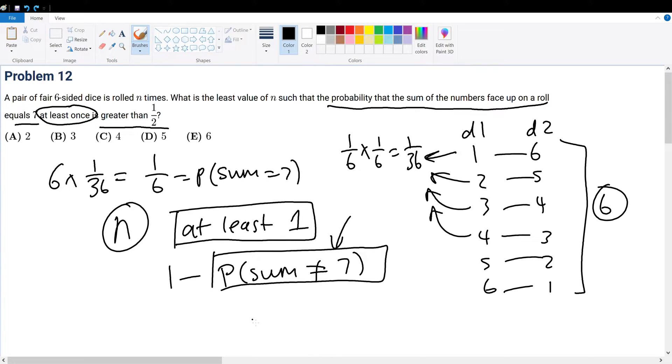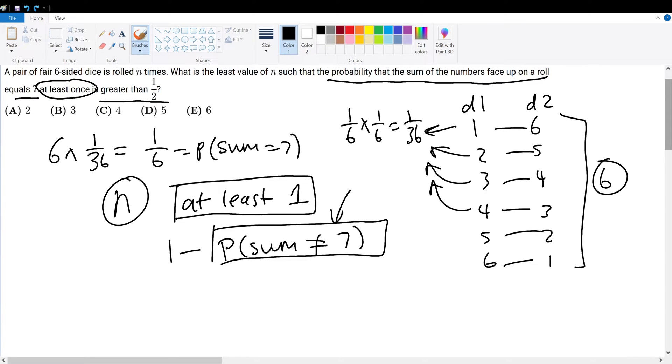Think about it: if I subtract out the probability that everything fails, what I'm left with is the probability that at least something works. That's complementary counting, one of the fundamental counting principles. At least 1 equals 1 minus the probability that everything else fails. In this case, where the sum is not equal to 7. We know P(sum=7) = 1/6, so 1 - 1/6 = 5/6 is the probability that the sum is not equal to 7.